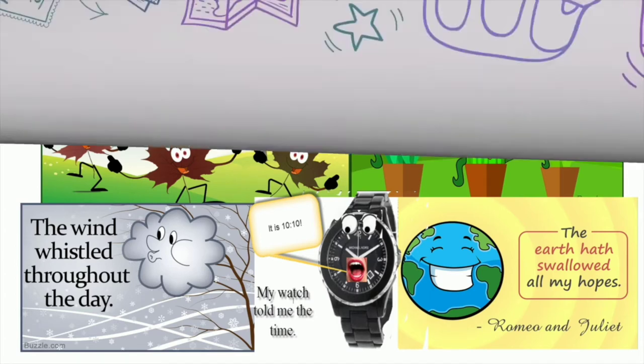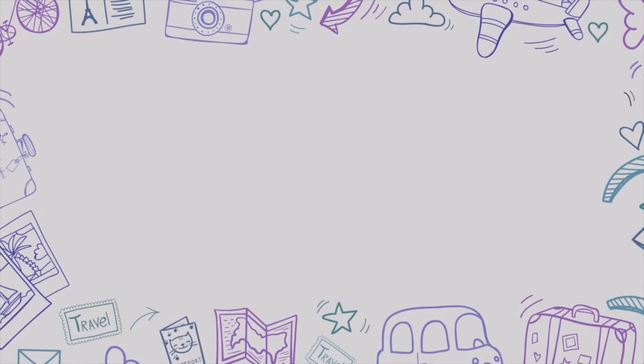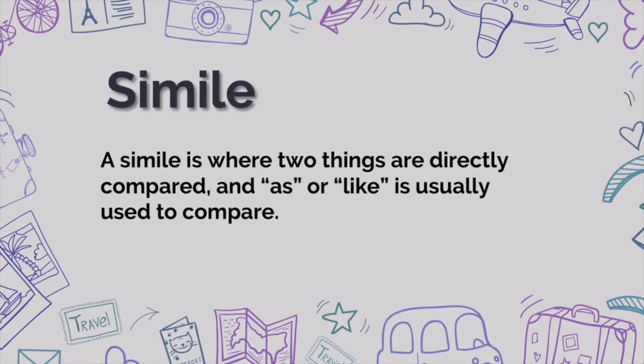Let's take a look at the next literary device: simile. A simile is where two things are directly compared, and 'as' or 'like' is usually used to compare. So, whenever you see 'as' or 'like,' that's a simile.